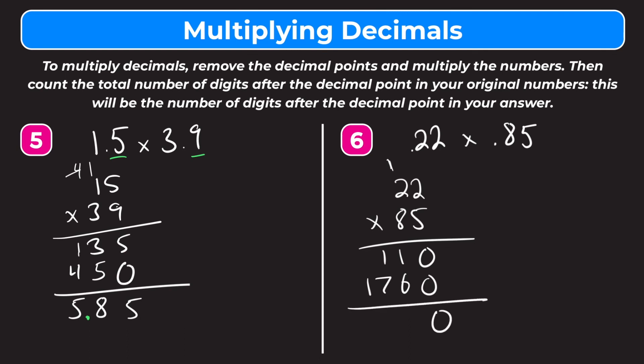Adding down: 0 plus 0 is 0, 0 plus 0 is 0, 1 plus 6 is 7, 7 plus 7 is 14 — giving us 1870. Now let's count the decimal digits to the right of the decimal point in our original numbers. We have 2 in 22 hundredths and 2 in 85 hundredths, giving us a total of 4. So we need 4 digits to the right of the decimal point in our answer, meaning the decimal point goes all the way to the left of the 1, making our answer 1,870 ten-thousandths.